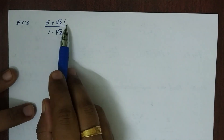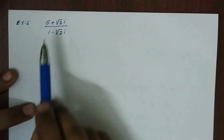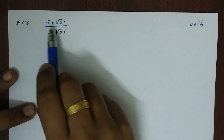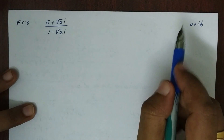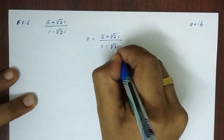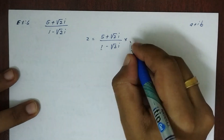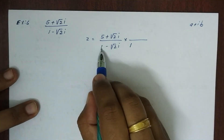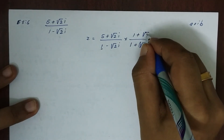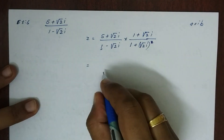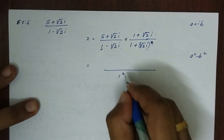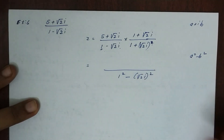Next question: simplify (5+√2i) divided by (1-√2i). This is a complex number in a+ib form. To conjugate the denominator, we multiply numerator and denominator by 1+√2i. The denominator becomes (1-√2i)(1+√2i), which is the a minus b times a plus b formula, giving 1² minus (√2i)².